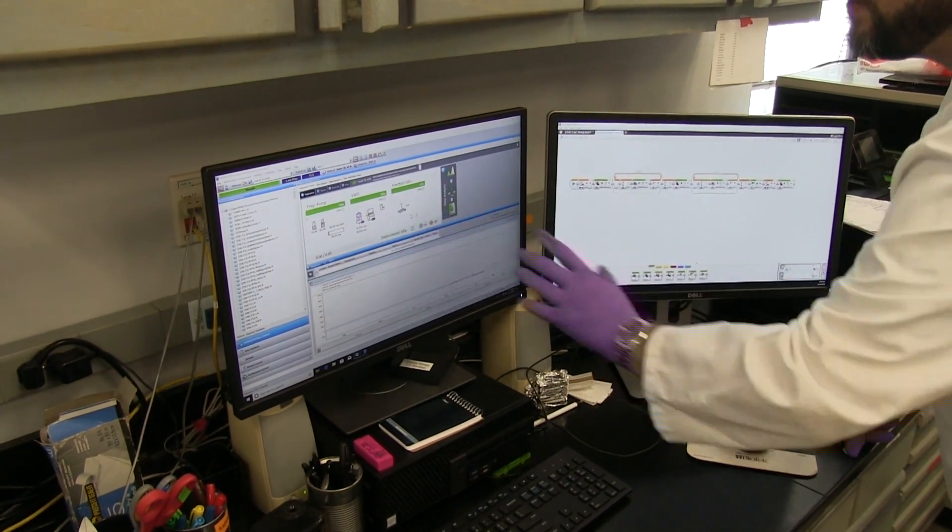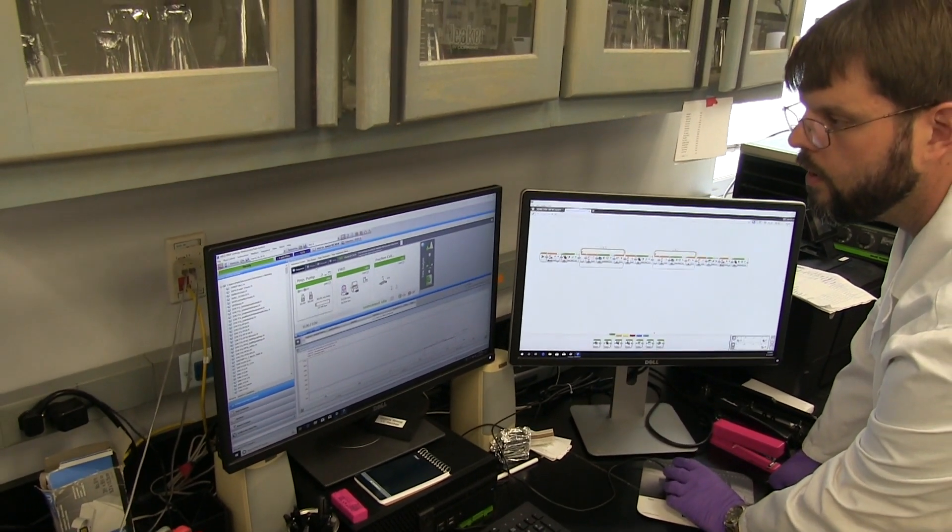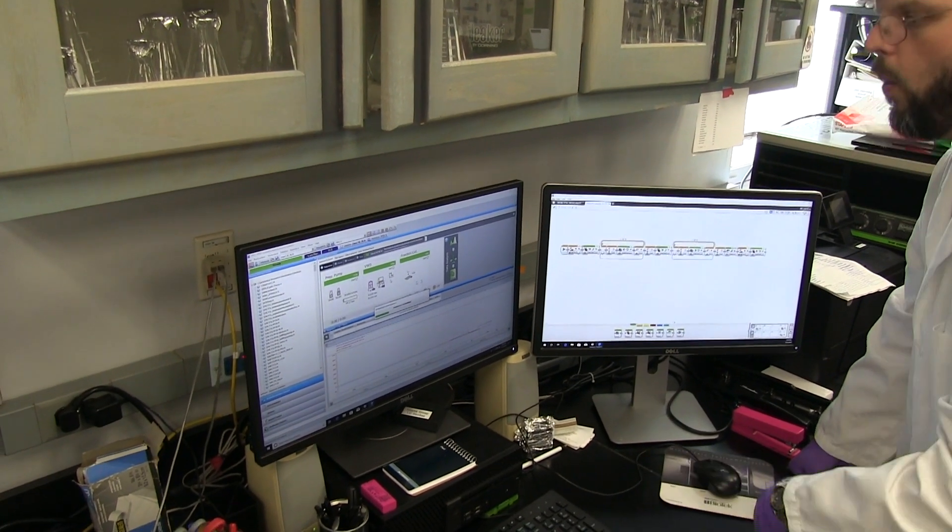It will now wait for a hard start on a button that we have affixed to the front of the HPLC. Next, we start the prep HPLC method just like a normal run and it will wait on a manual injection just like any other HPLC run.